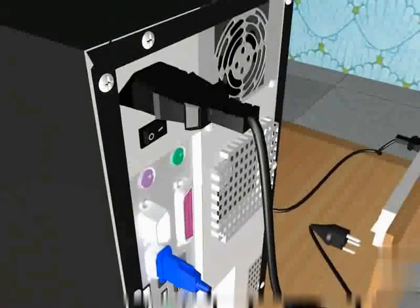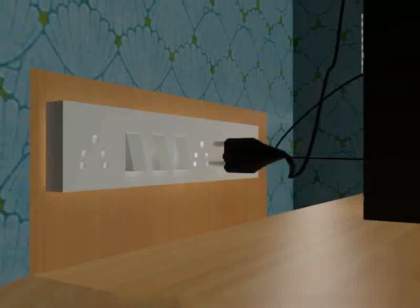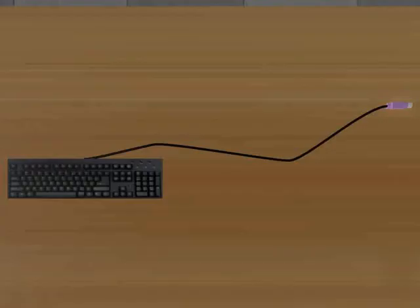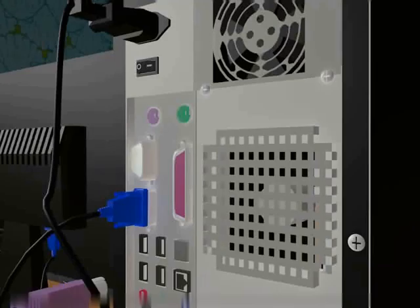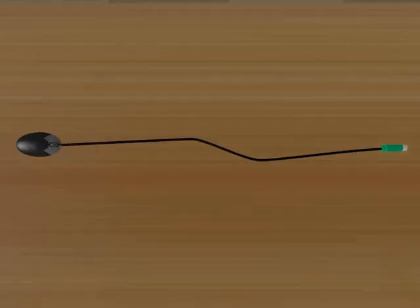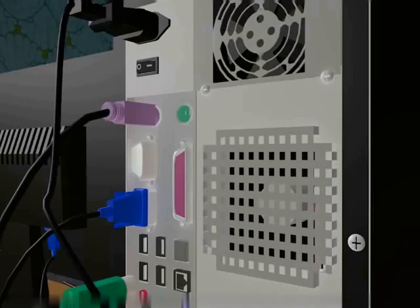This is the power cable of the CPU. Connect it to the CPU as shown. Then connect it to a power supply socket. Next, connect the keyboard cable to the CPU as shown. The port for the keyboard is usually purple in color. You can connect the mouse to the port which is green in color.